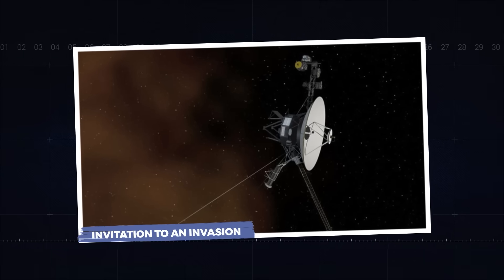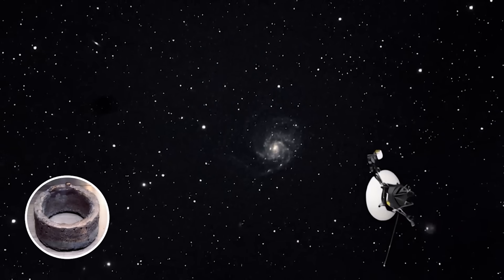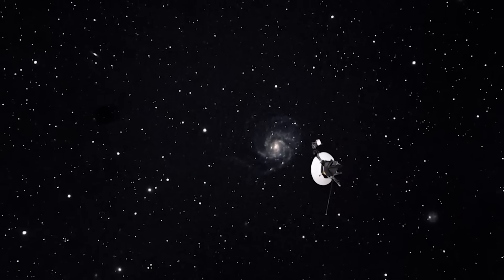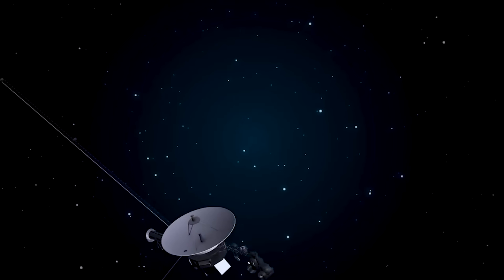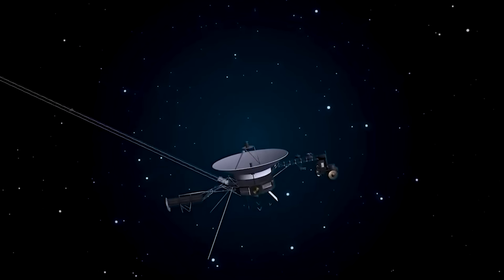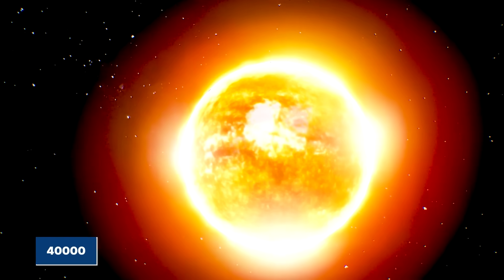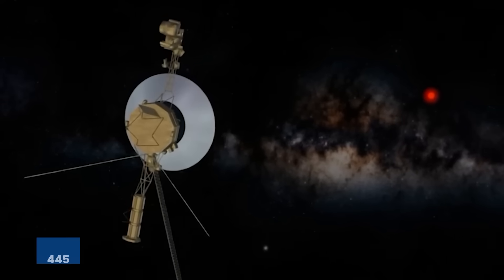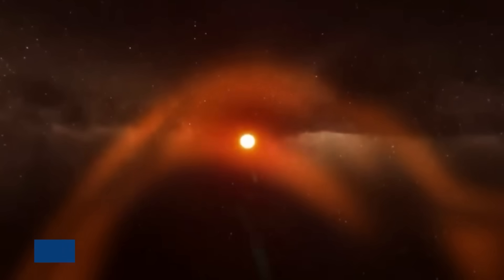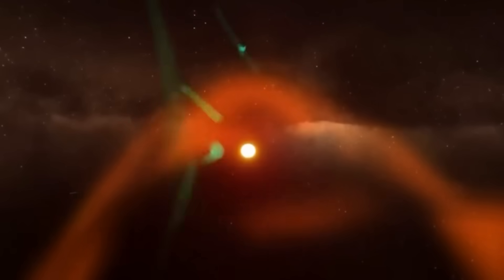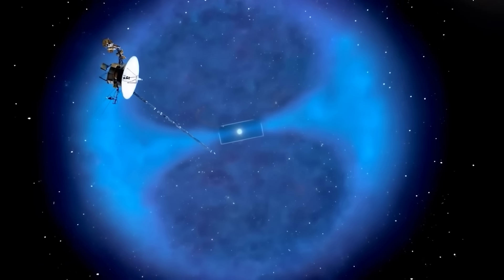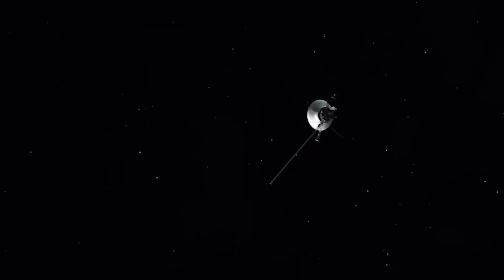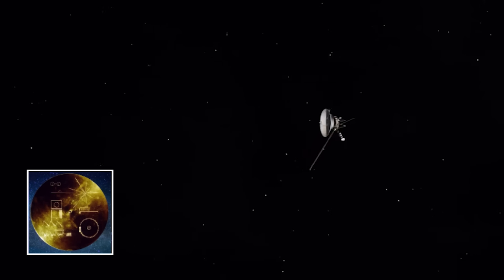Invitation to an invasion. As its plutonium power source slowly fades, Voyager 1 will become a ghost ship, a relic destined to coast silently and eternally through the cosmos. In about 40,000 years, it will pass a star called Gliese 445. But its journey will continue long after its creators have turned to dust. It carries a passenger, perhaps the most important artifact humanity has ever created, the golden record.